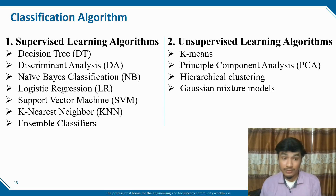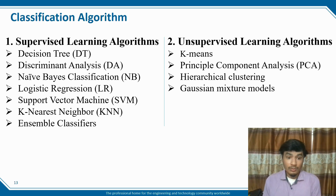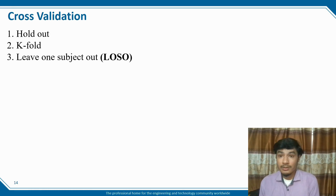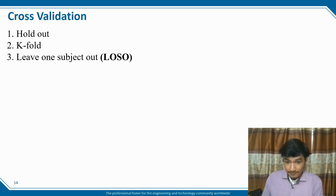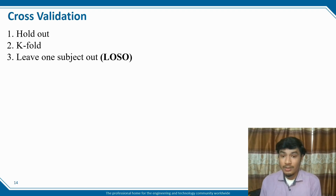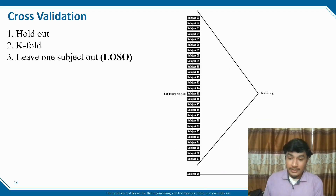For cross-validation, there are three types: hold-out, leave-one-out, and Leave-One-Subject-Out (LOSO). In our case, we use the LOSO technique, which is more efficient and faster than hold-out and k-fold. LOSO is a training and testing algorithm. We work with 28 volunteers; LOSO trains on volunteers 1 to 27 and tests on the remaining volunteer, iterating 28 times.